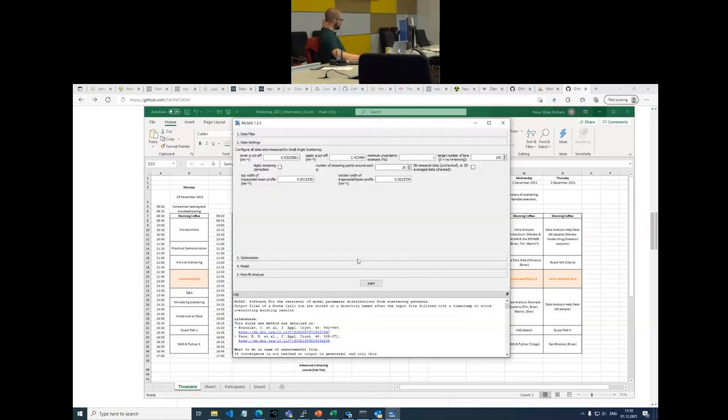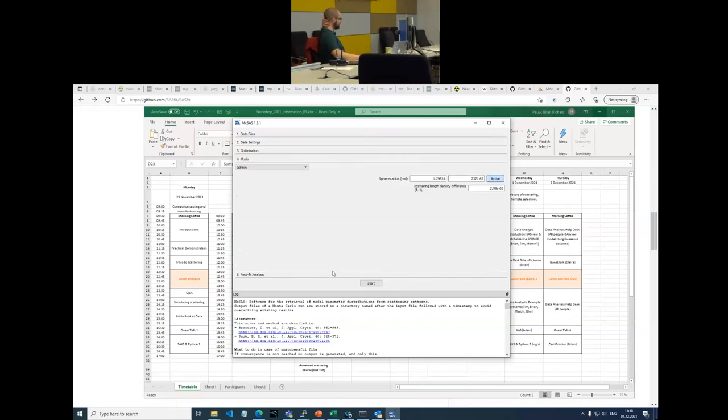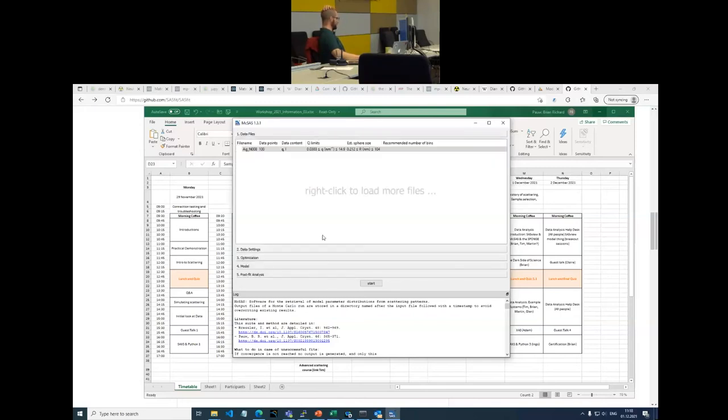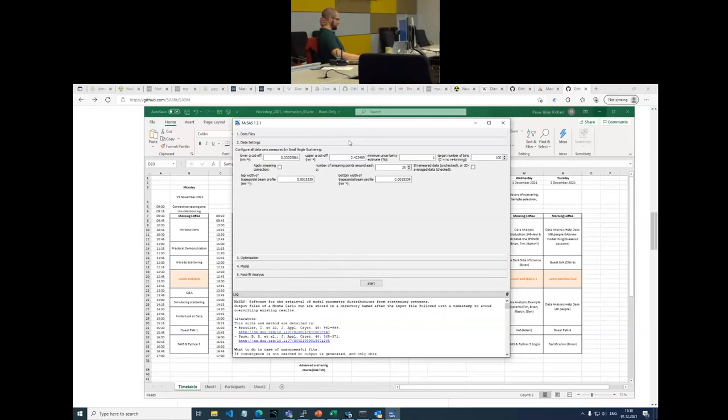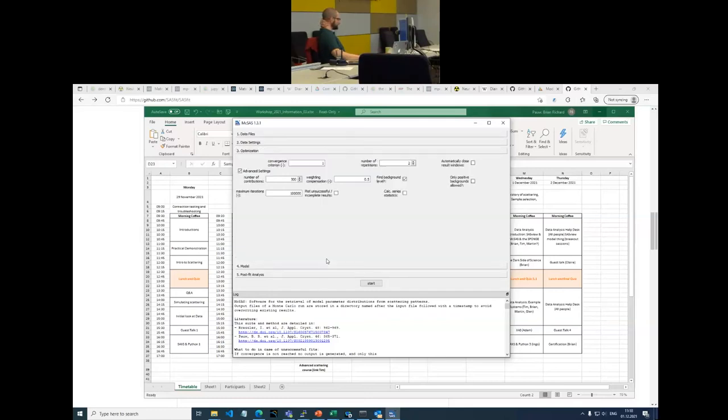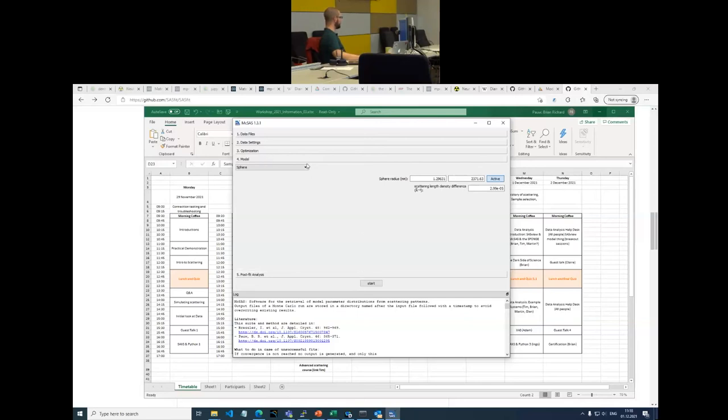Now, there are a couple of panels here. Data settings, optimization, model, and post-fit analysis. I can, if you first use this, you can skip data settings. I think they should be set to reasonable values. You can skip the optimization. That should also be set to a reasonable value. Important here is the convergence criterion. That is the reduced chi-square when MaxSass will say, okay, I've described the data. I will stop. And the number of repetitions. I've set this to two, so you will actually see a result in a reasonable time. Then we have the model panel. This is, by default, set to sphere.